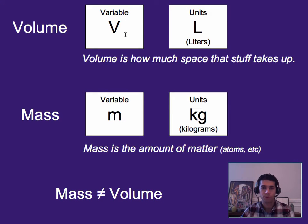Now, volume, we won't use very much in this class, but its variable is V. It's usually measured in liters or milliliters. It can also be in cubic centimeters. And it's how much space an object takes up. Now, mass is the amount of matter, atoms, etc. in an object. Its variable is M, and its units are in kilograms. Sometimes we'll use grams, but usually we'll be using kilograms in this class. Remember, mass, not the same thing as volume.